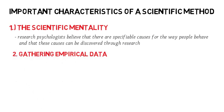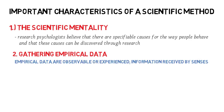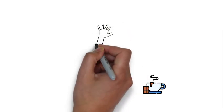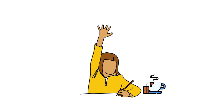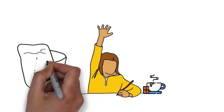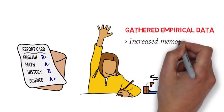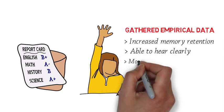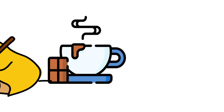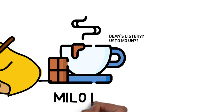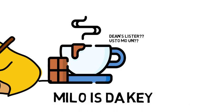Next, we must gather empirical data. Ang empirical data, ito yung information na na-observe natin through our five senses. For example, you wanted to know if drinking hot chocolate in the morning will increase your performance in school. So nag-conduct ka ng experiment, and na-observe mo na most of your participants mas tumalas ang kanilang memory, mas naririnig nila nang maayos yung mga lessons and mas nakiking attentive na sa class. So those are your gathered empirical data. Pero of course, hindi yan sapat. Hindi 100% guaranteed na tama ang conclusions mo.